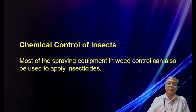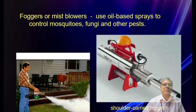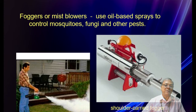Chemical control of insects: most spraying equipment used in weed control can also be used to apply insecticides. For example, foggers or mist blowers use oil-based sprays to control mosquitoes and other pests. On the left is a handheld fogger, and on the right is the shoulder-carried fogger. These are very useful today for controlling COVID-19 and mosquito-borne diseases.